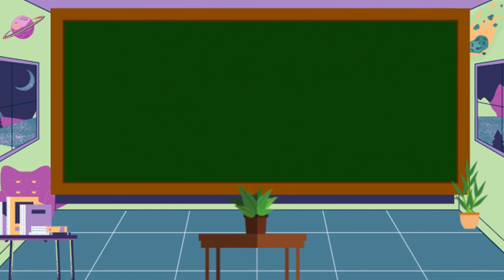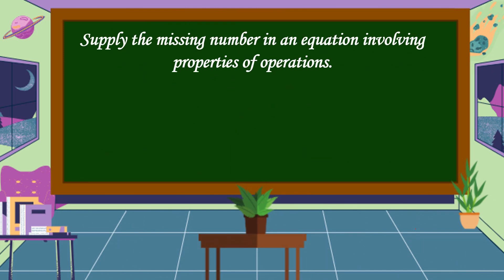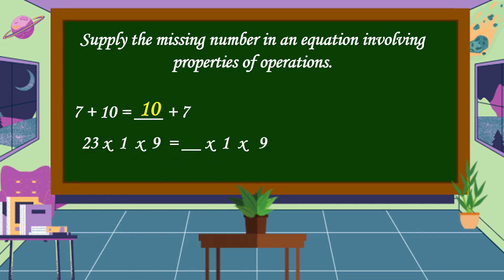Let's study the following exercises. Supply the missing number in an equation involving properties of operations. Our first equation: 7 plus 10 is equal to blank plus 7. The missing number is 10. This is the commutative property of addition. Next equation: (23 times 1) times 9 is equal to blank times (1 times 9). The missing number is 23. This is the associative property of multiplication.